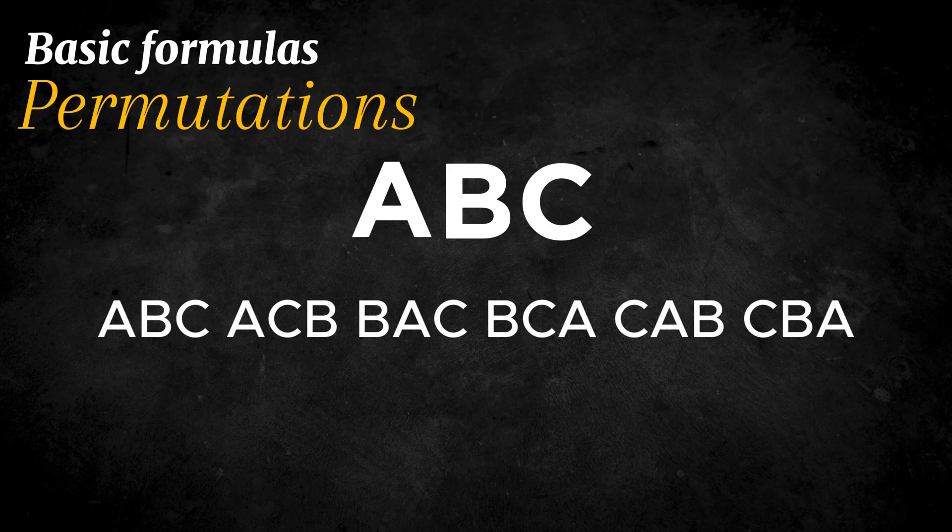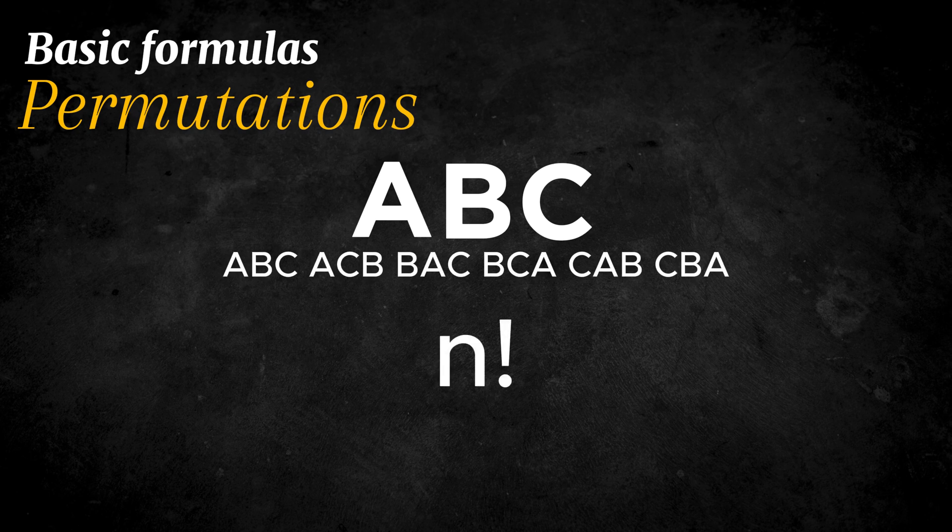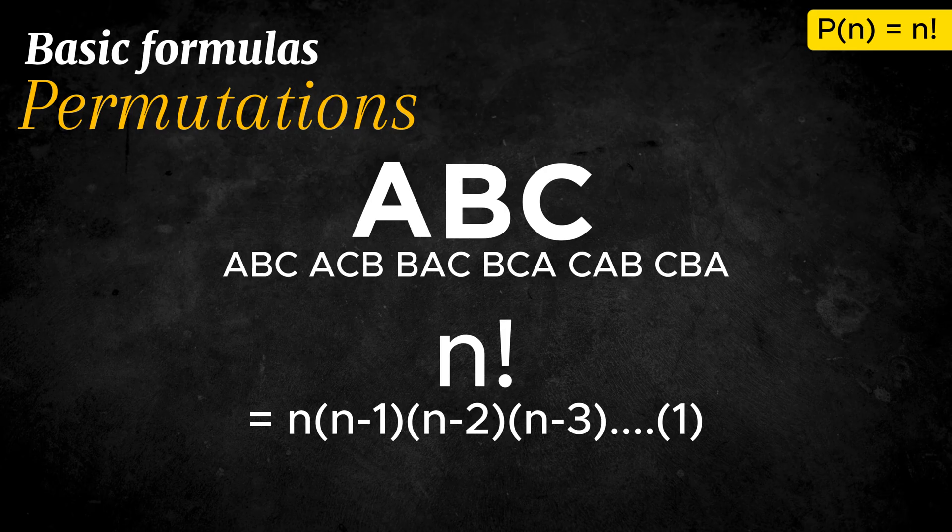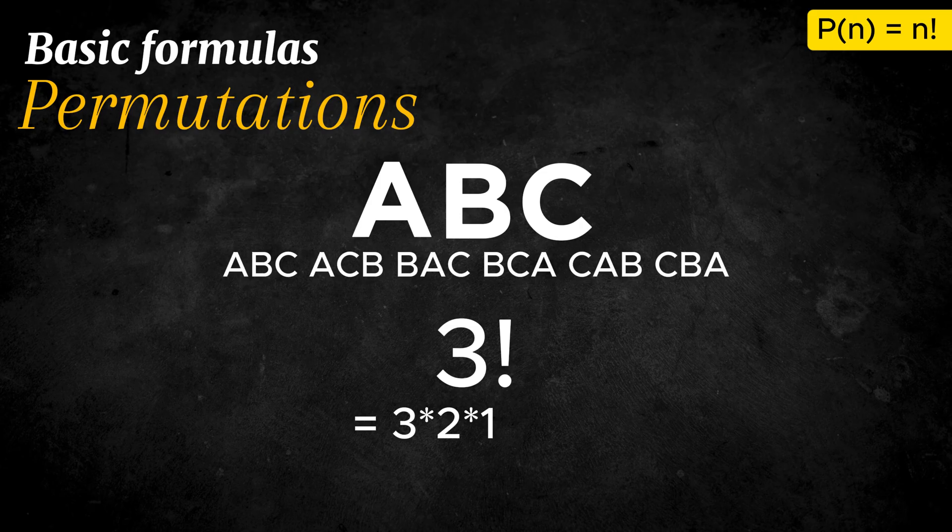We can calculate this using the formula n factorial, where the n stands for all the elements in a given context, written as n with an exclamation mark, which means multiplying all whole numbers from n down to one. So for three letters, three factorial equals three times two times one, which is six.